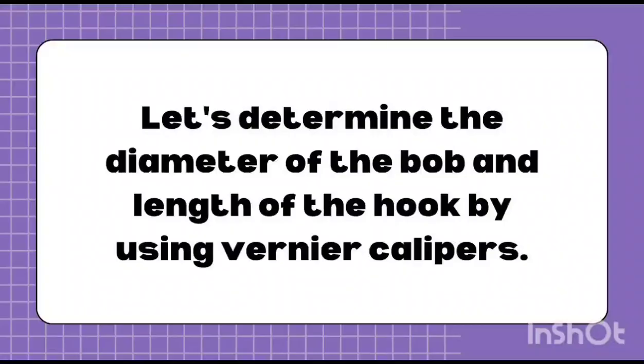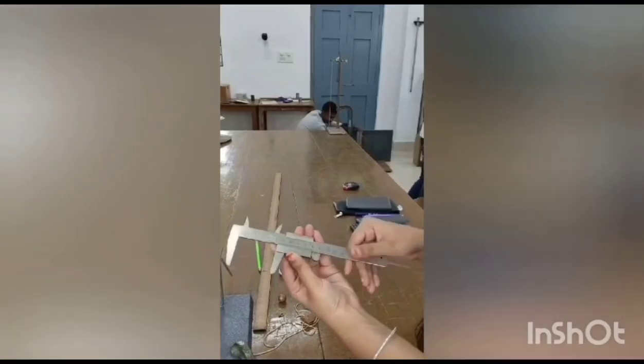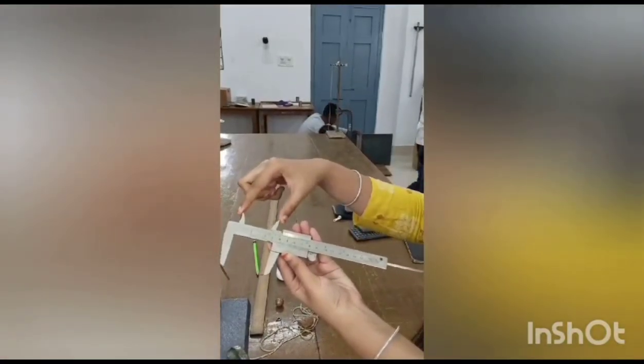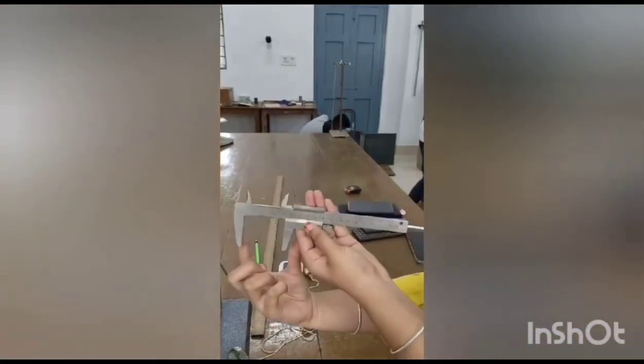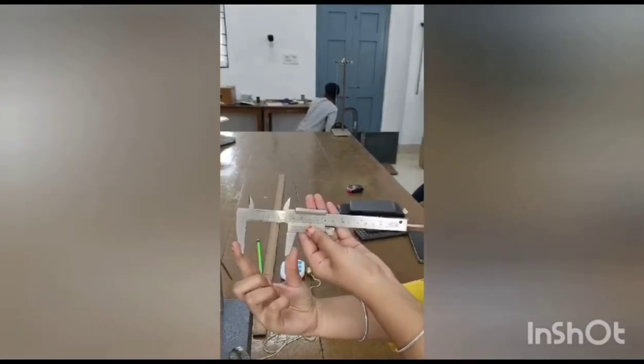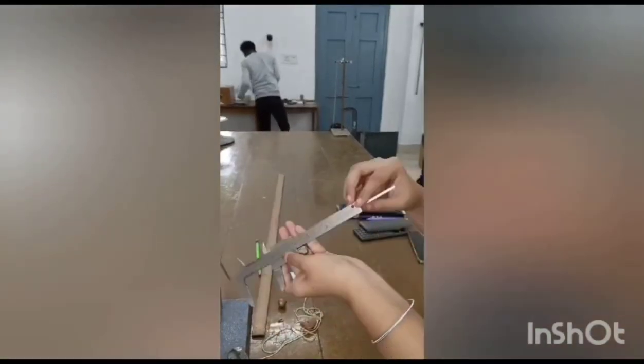Let us know how to use the vernier calipers. These two are upper internal jaws which are used to measure internal diameters, and these are lower external jaws which are used to measure external diameter.